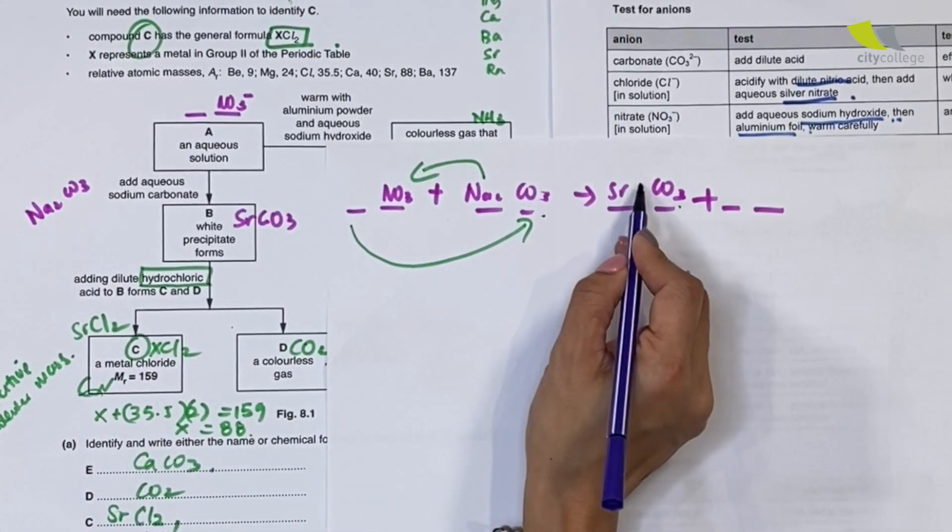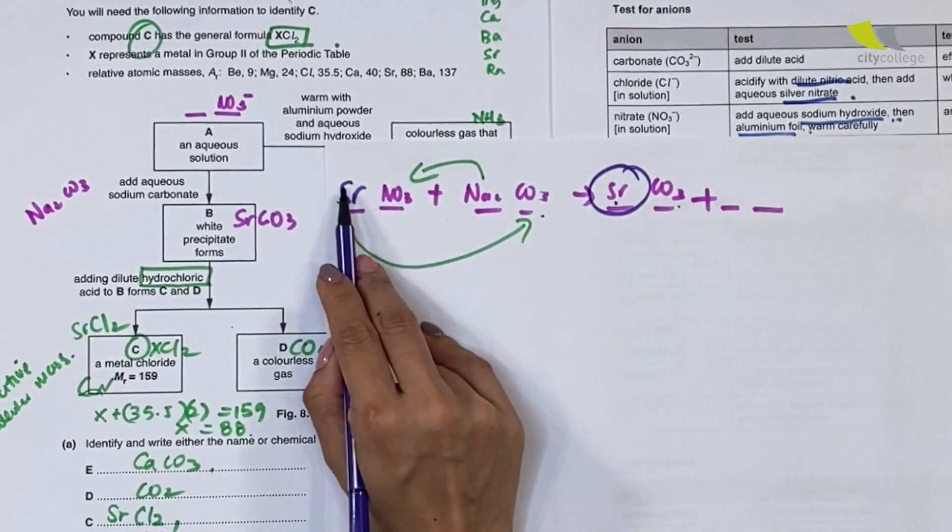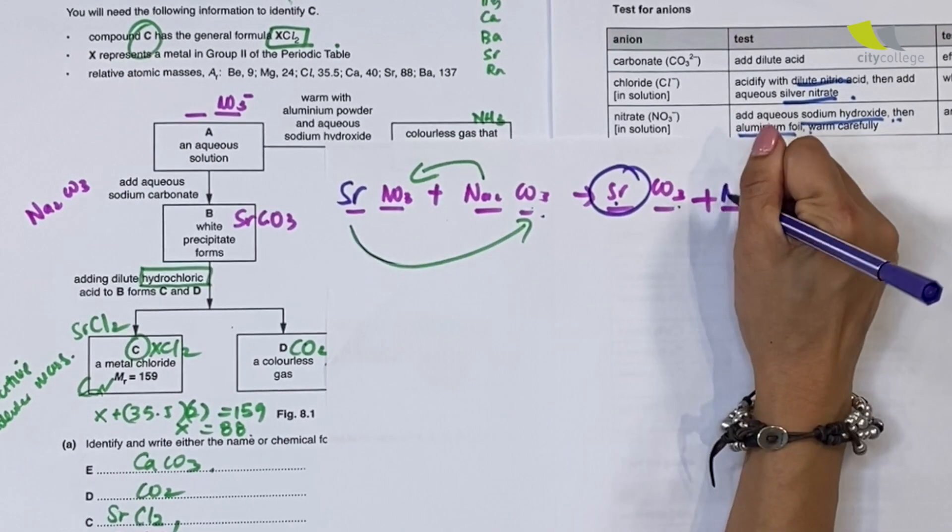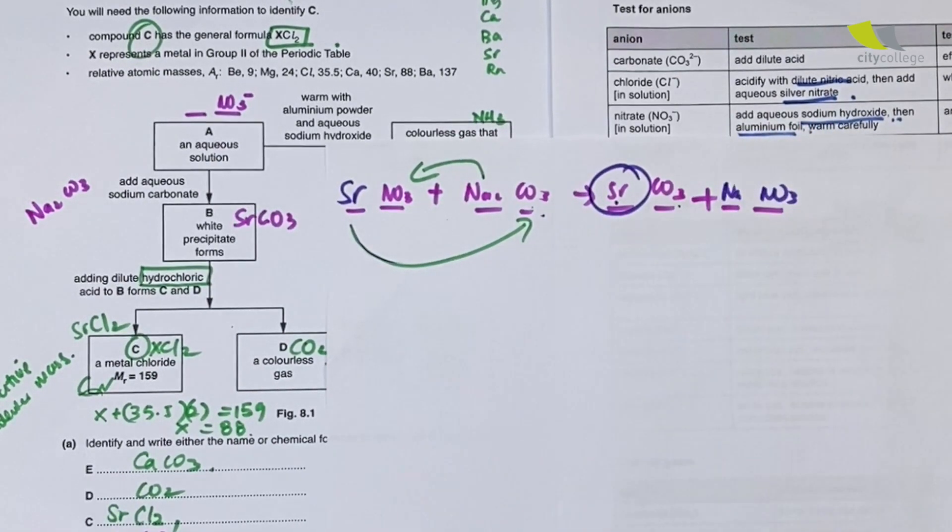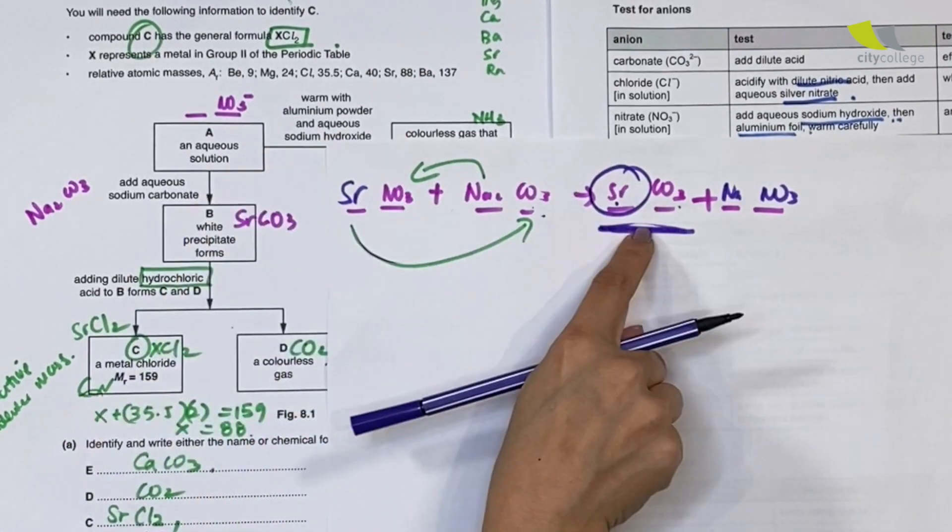It's a very obvious test for nitrate. Because ammonia gas is evolved and they turn red litmus paper blue, that's nitrate present. Then who is your A? You notice that this A solution—A to B—I know one of them is nitrate plus sodium carbonate, Na2CO3.